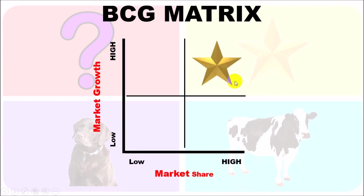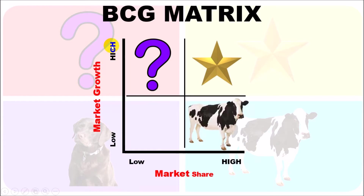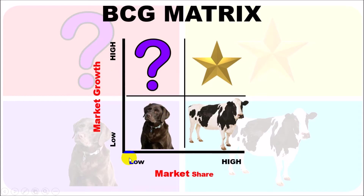Within these four quadrants, products with high market share and high market growth are classified as your star products. Products with low market share in a high-growth market are your question marks. Products with large market share but low market growth are your cash cows. And products with low market share and low market growth are your dogs.